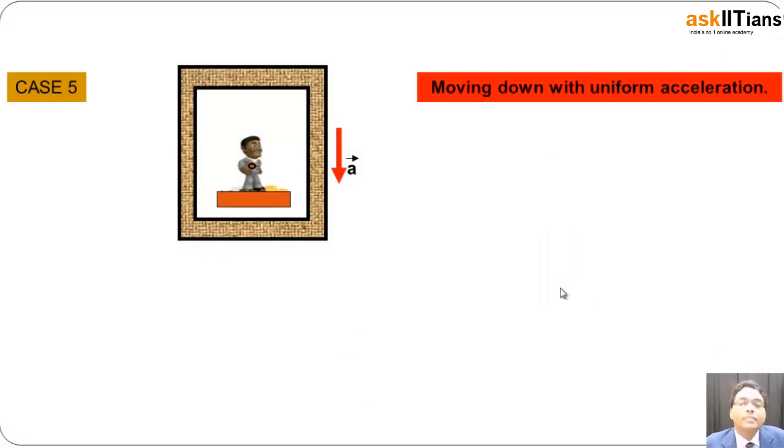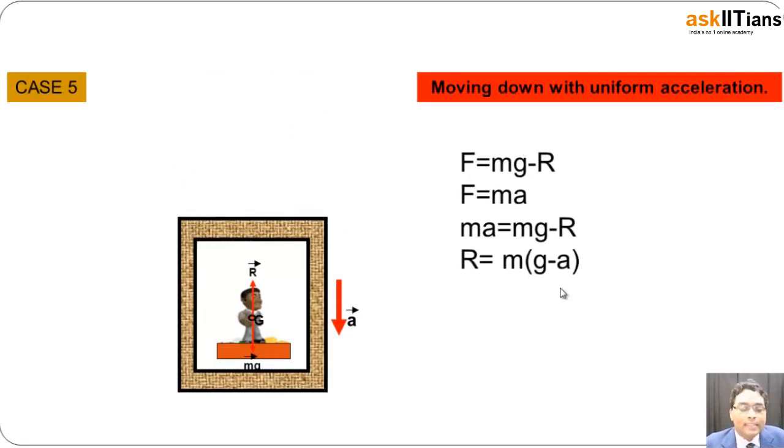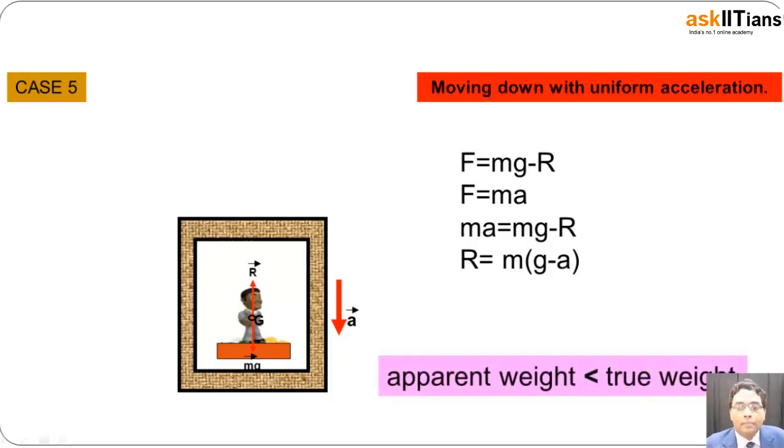In a similar manner, when the body is moving down with a uniform acceleration, we will say that in this case the apparent weight is going to be less than the actual weight.